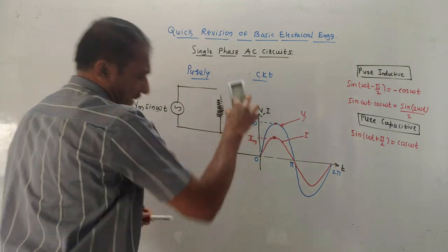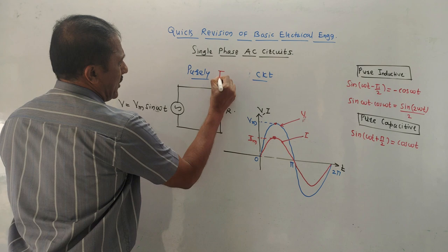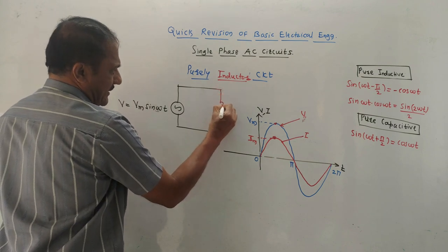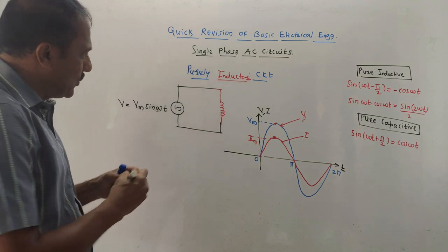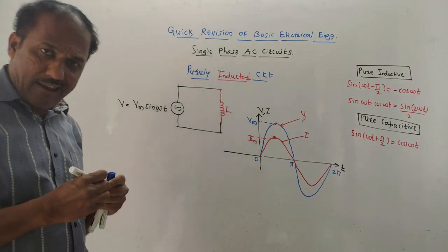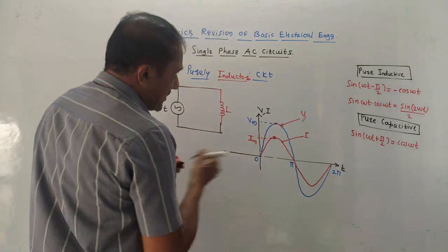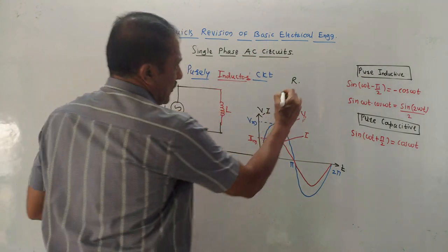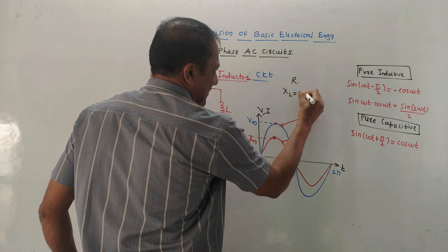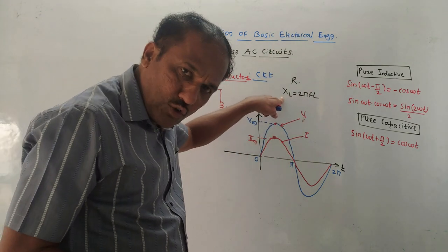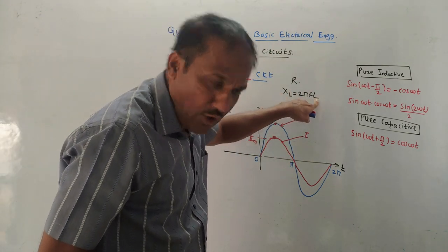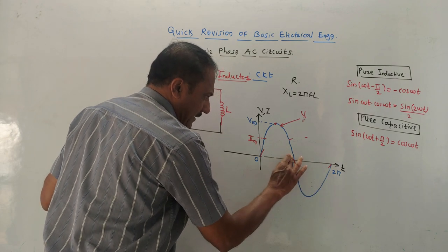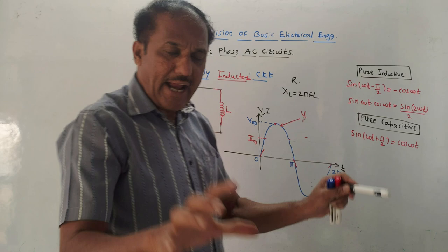Next is the purely inductive circuit. In case of an inductor, just replace the resistor with an inductor — notation is L. Remember one important concept: resistance R is opposition to the flow of current, whereas the opposition provided by the inductor to the flow of current is denoted by XL, and XL = 2πFL, where XL is known as reactance of inductance, L is the value of inductance, and F is the frequency.